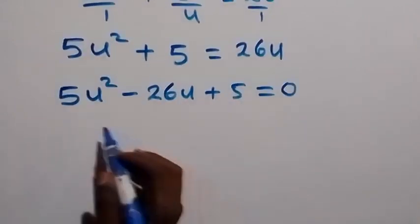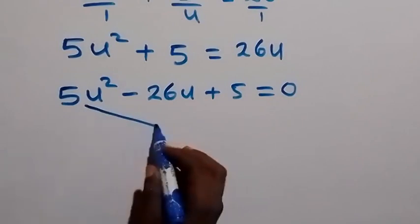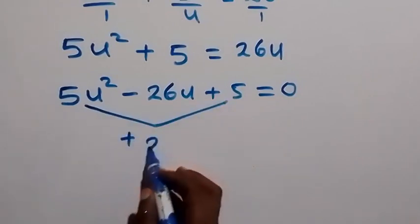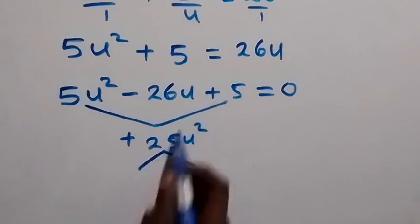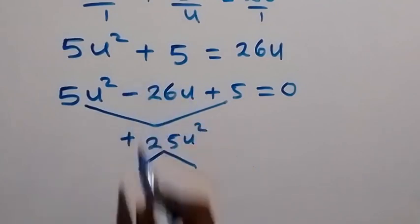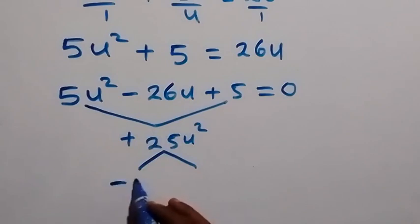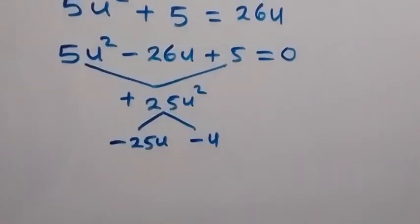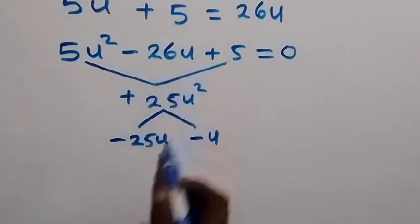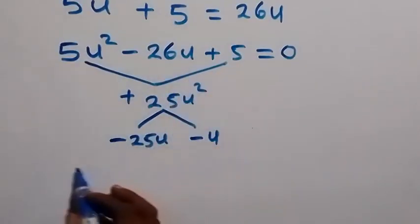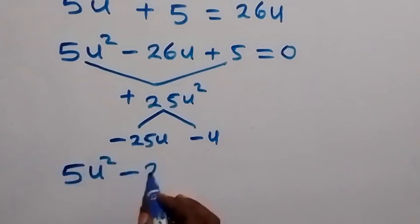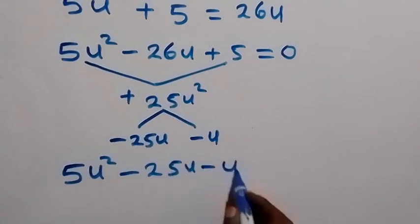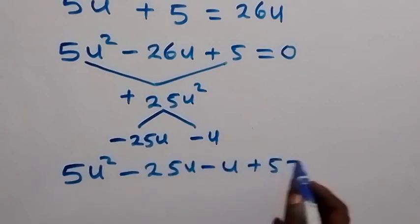This will become 5u squared minus 26u plus 5 equals to 0. Then from here, we can factorize this. We need 5u squared, and we break the middle term into two factors such that their sum will be minus 26u — that will be minus 25u, then minus u. We replace minus 26u with these two terms, giving us 5u squared minus 25u minus u plus 5 equals to 0.